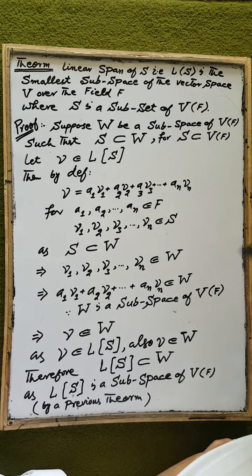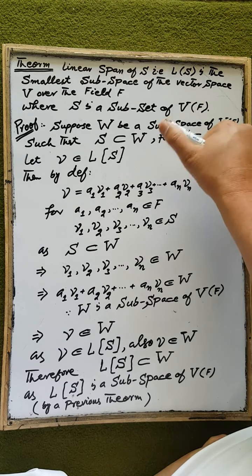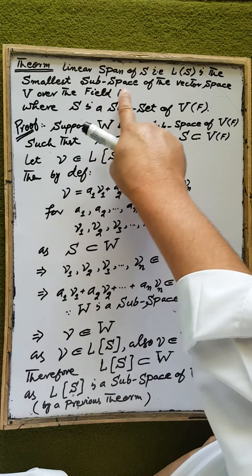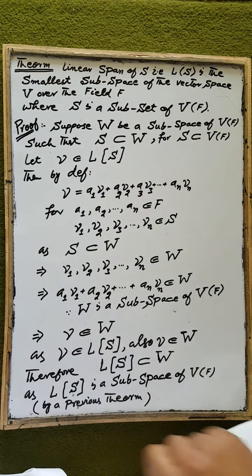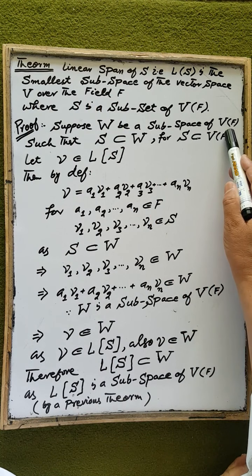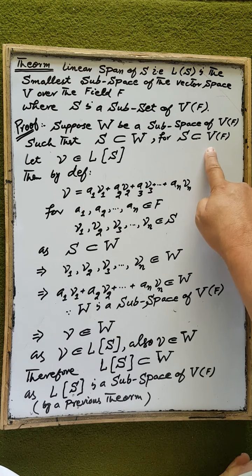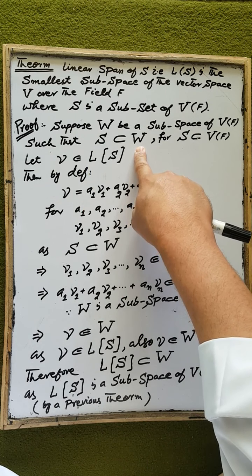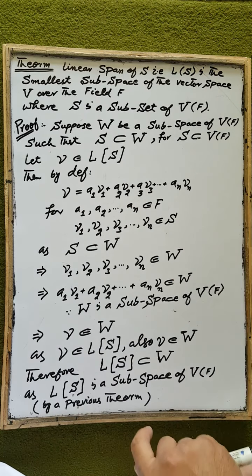Our next theorem states that the set spanned by the set S — that is, the linear spanning set spanned by S — is the smallest subspace of the vector space V over the field F. Suppose W is a subspace of the vector space V over the field F such that S, which is a subset of V over F, is also a subset of the subspace W.